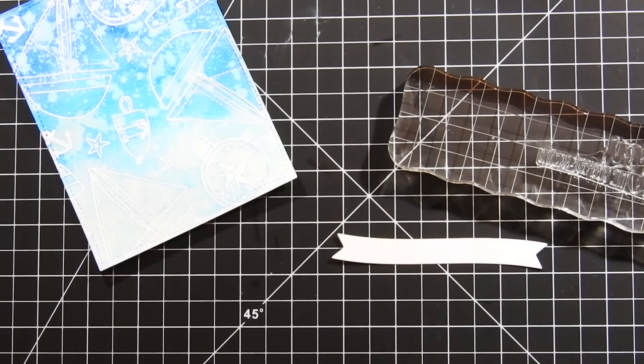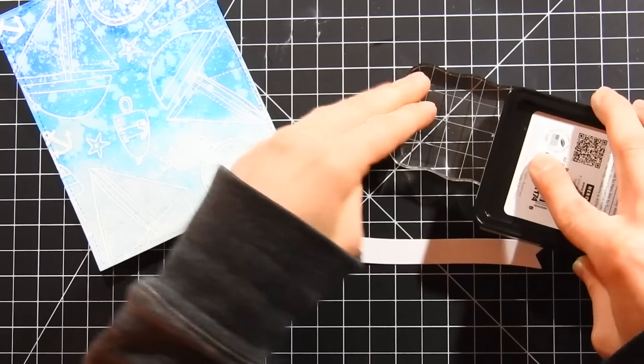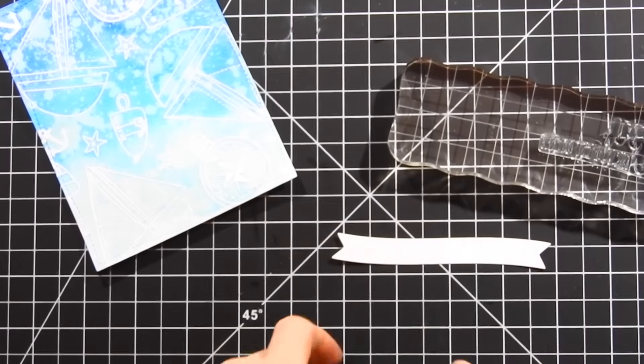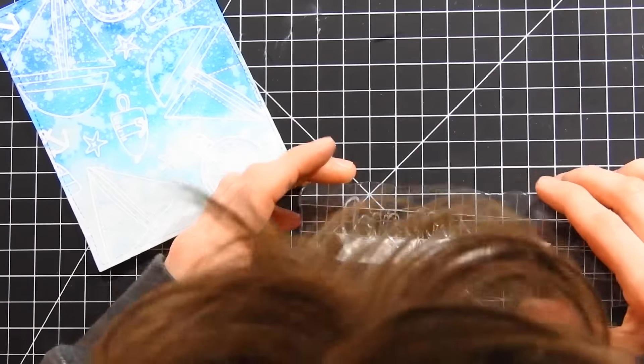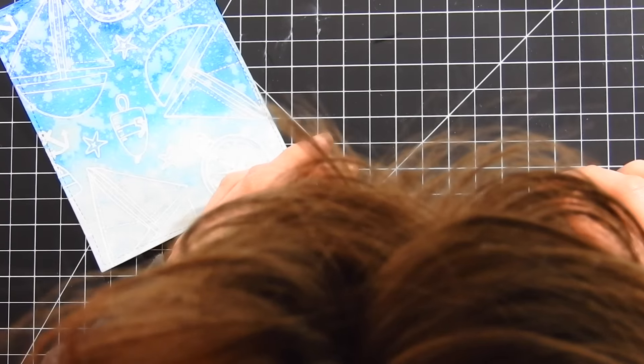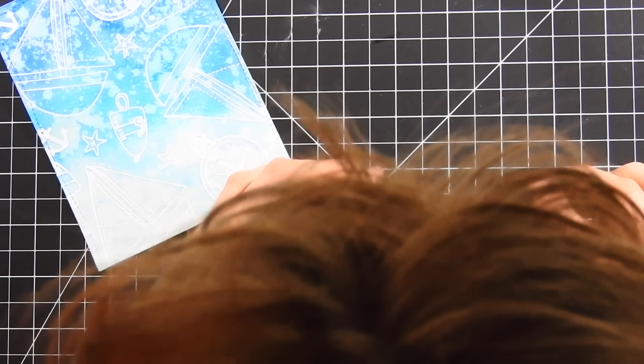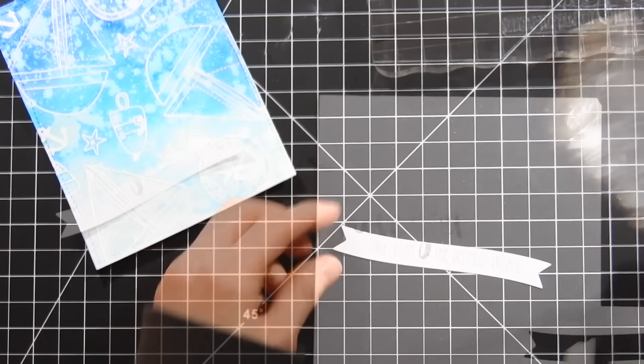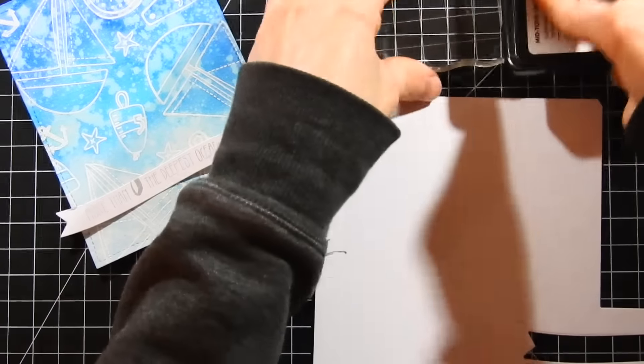I'm going to stamp this in some Soft Granite Hero Arts ink. Now that 'love you' portion hangs off the top of the sentiment banner, however I'm going to be cutting the 'love you' portion out of another piece of cardstock, so I'm not worried about it not being stamped onto the banner. So I'll go ahead and clean off my stamp, and I'm going to take some navy ink from Hero Arts and stamp that same sentiment onto this cardstock using that ink color.